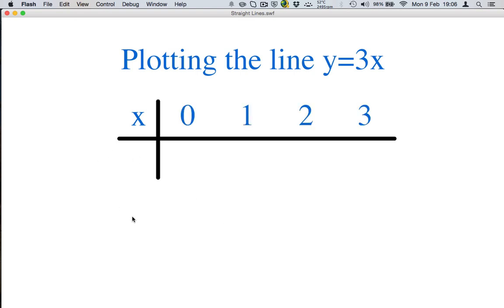So we're going to work out 3x so this is 3x and this means 3 times x. So if x is 0, 3 times 0 is 0. If x is 1, 3 times 1 is 3. If x is 2, 3 times 2 is 6. If x is 3, 3 times 3 is 9.